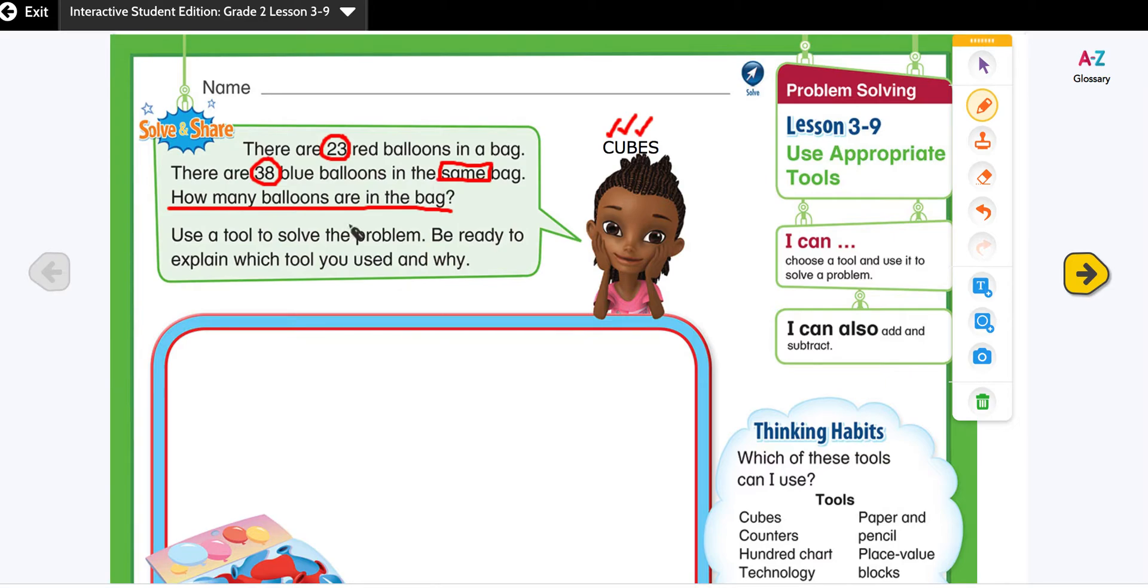How many balloons are in the bag? Since they joined both numbers in the same bag, that means we have to use the addition strategy. Next step is to evaluate the steps. We evaluated the steps that we need to use the equation 23 plus 38, and we need to find the sum.